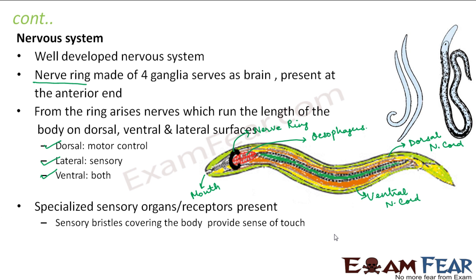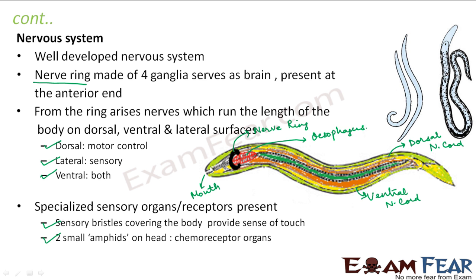Specialized sensory organs or receptors are also present. Sensory bristles covering the body provide the sense of touch. Two small amphids on the head act as chemoreceptor organs, sensitive to chemicals. Some nematodes also have pigmented eye spots. So bristles, amphids, and eye spots are the different sensory structures present. A well-known example of a nematode is Ascaris, the small roundworm commonly found in human intestines — also known as the small intestinal roundworm.